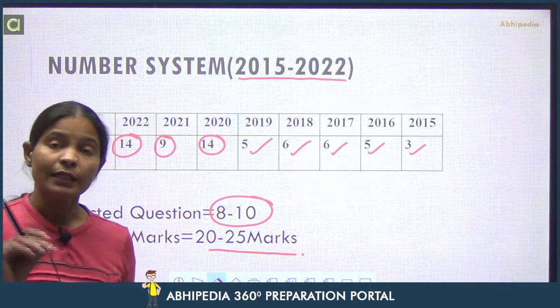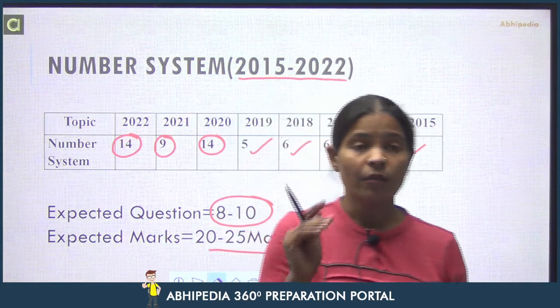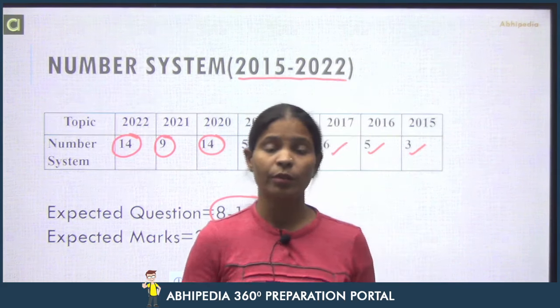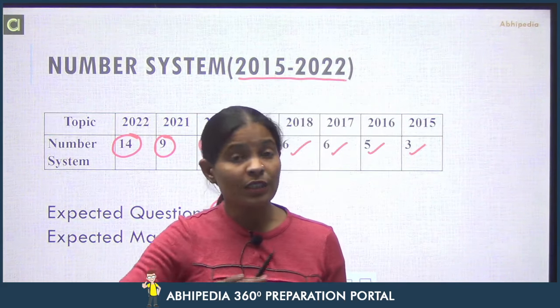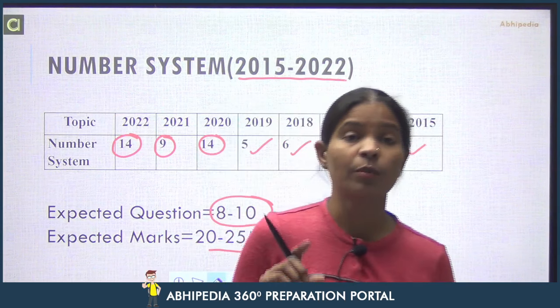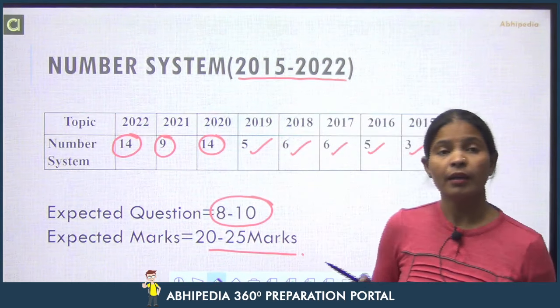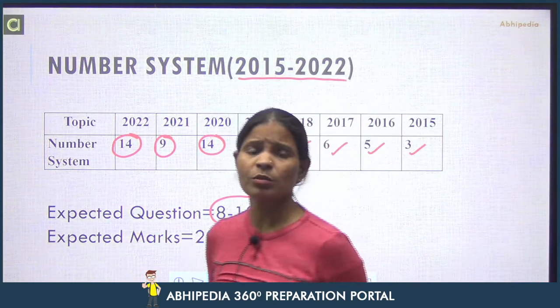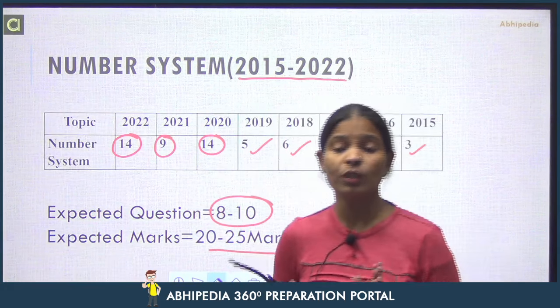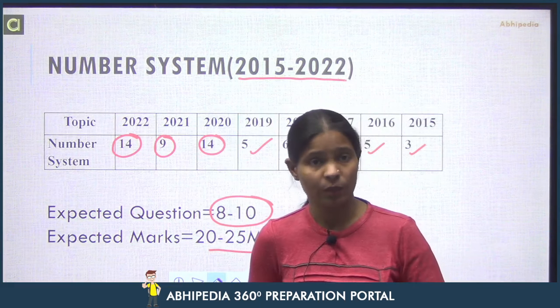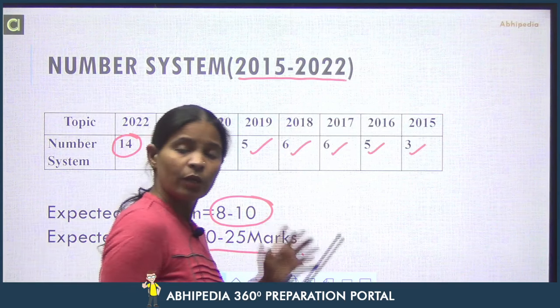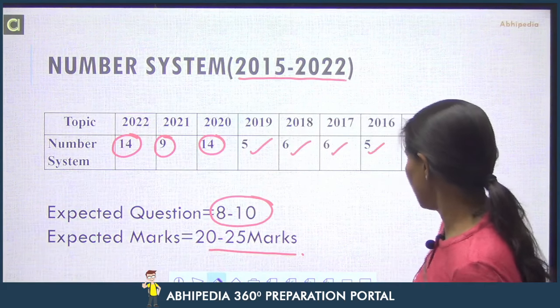You can expect 8 to 10 questions from Number System in the exam, which means worth 20 to 25 marks. We need to prepare this well and clear all concepts regarding Number System like remainder theorem, division rule, divisibility rules, unit digit concept, Fermat theorem, prime numbers, composite numbers, consecutive numbers - all details you should know.